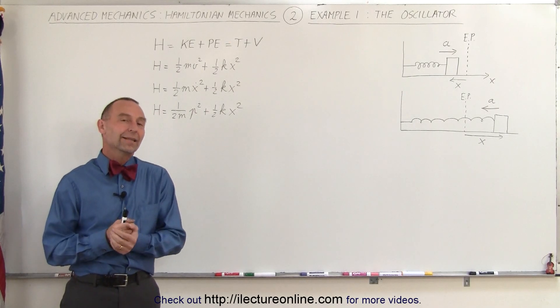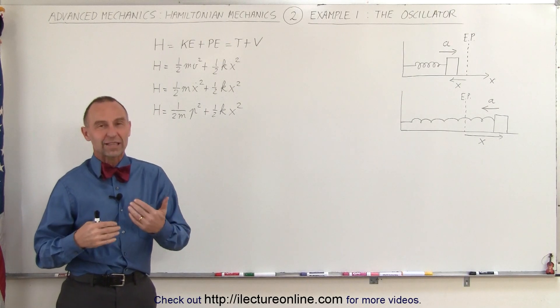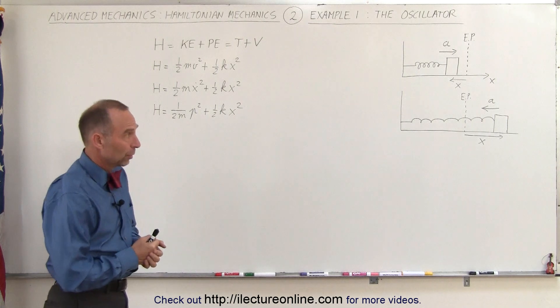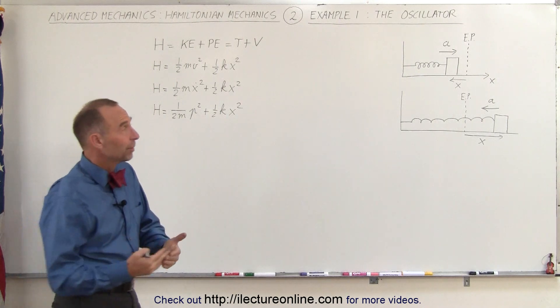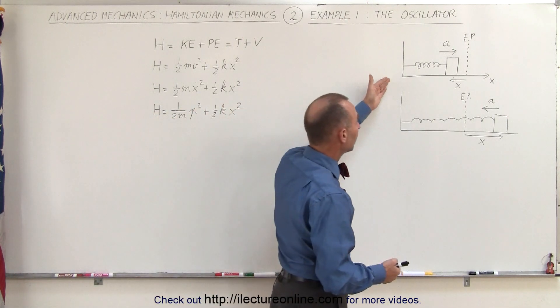Welcome to ElectronLine. Now let's do an example so we can understand the Hamiltonian a little bit better. We're going to do a simple example: the oscillator.